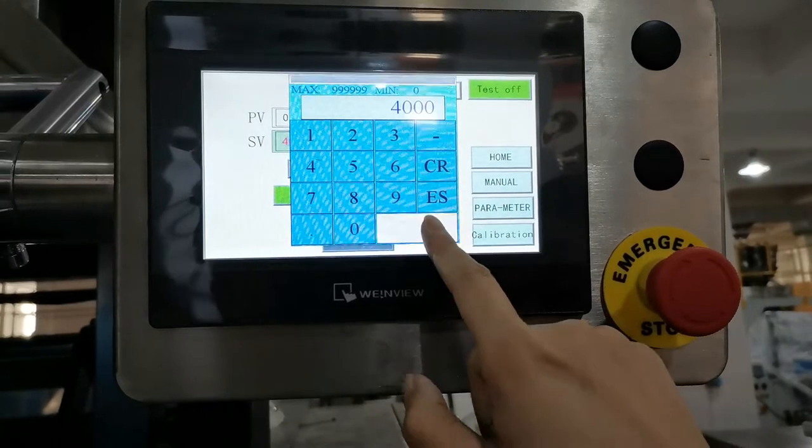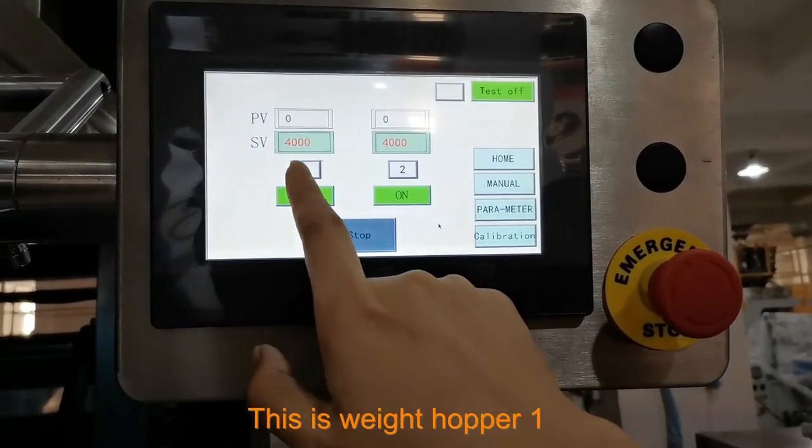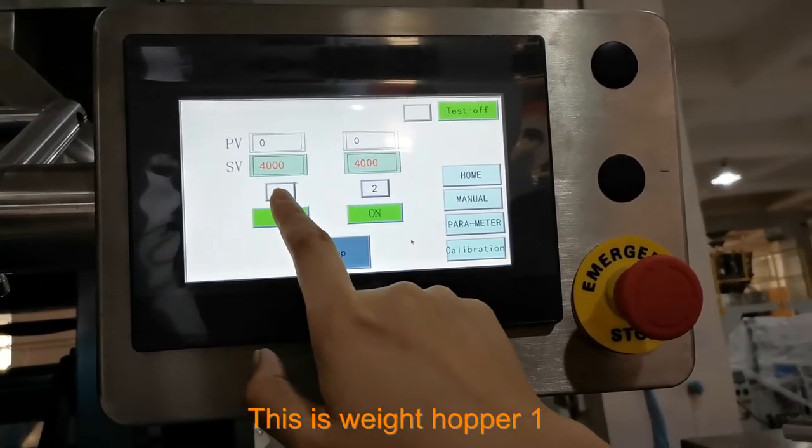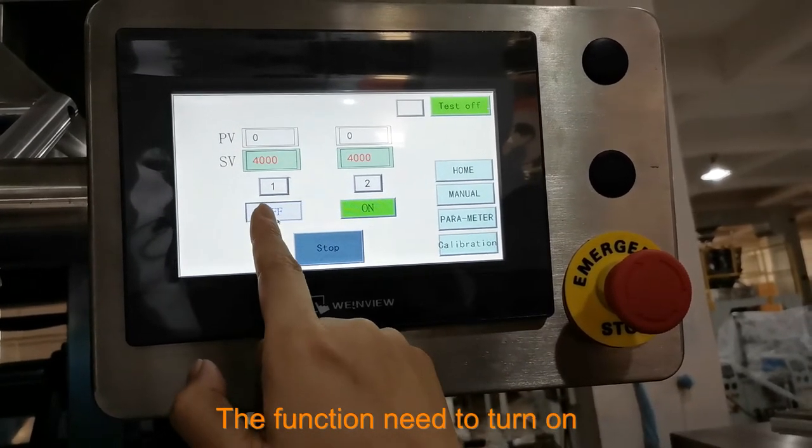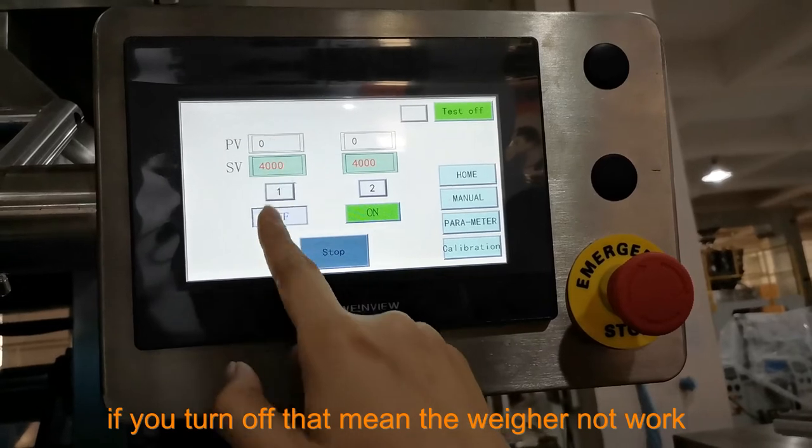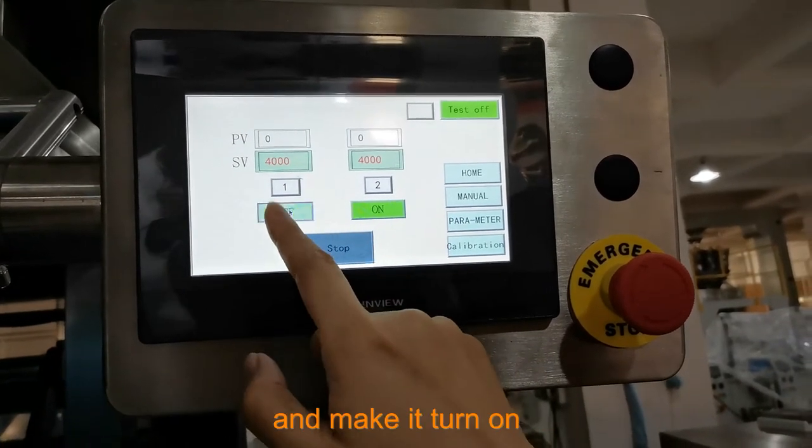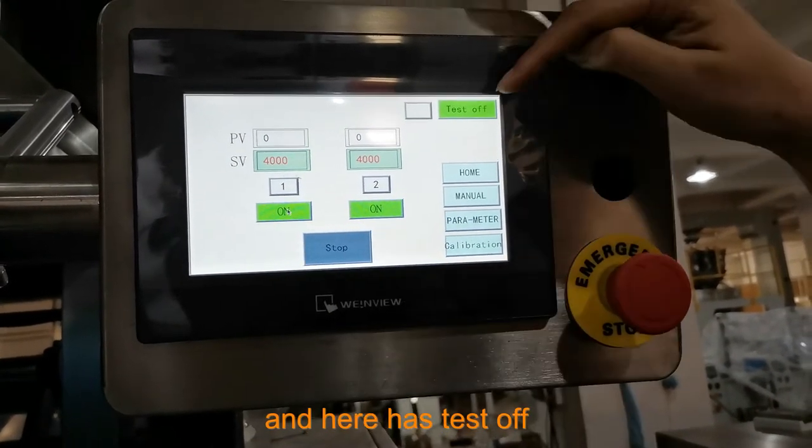For 4kg packing, you can change here. This is where for one, where for picture. This function needs to turn on. If you turn off, that means this where is not working. Make it turn on, and here has a test off function.